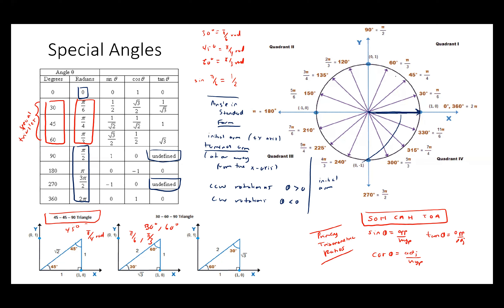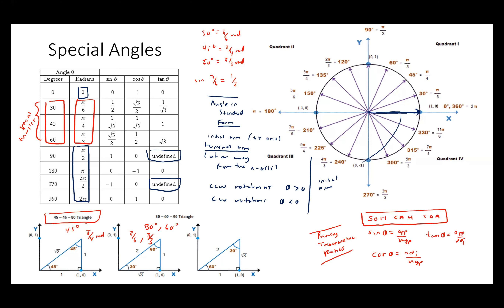In standard position, counterclockwise rotations are positive degrees and clockwise rotations are negative angles. So counterclockwise is positive, clockwise is negative. If the angle is zero radians, the initial and terminal arm are on the x-axis. If the terminal arm ends on the y-axis, the angle is 90 degrees. 180, 270, and 360 degrees follow accordingly.